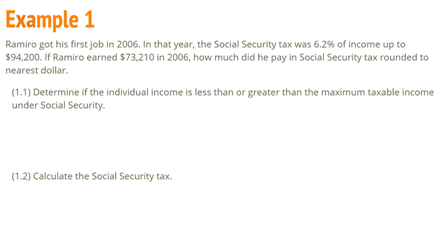Some important numbers: 6.2%, $94,200, and of course the earned income of $73,210. Our first step is to determine if the individual income is less than or greater than the maximum taxable income allowed under social security.